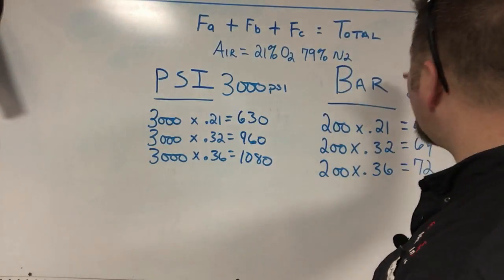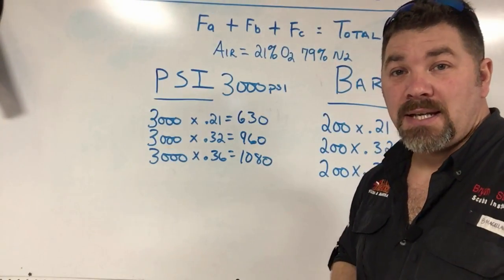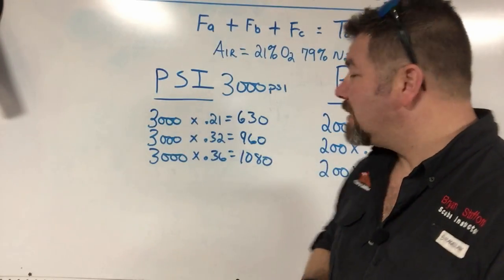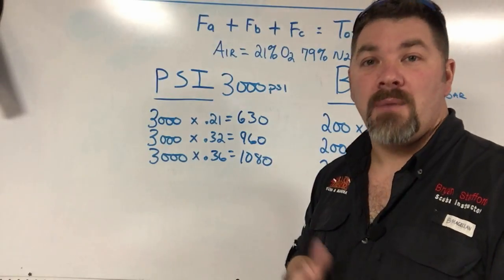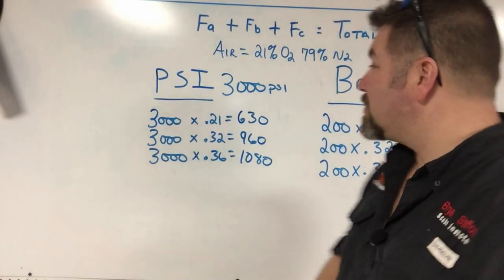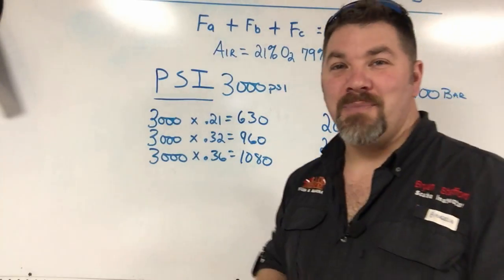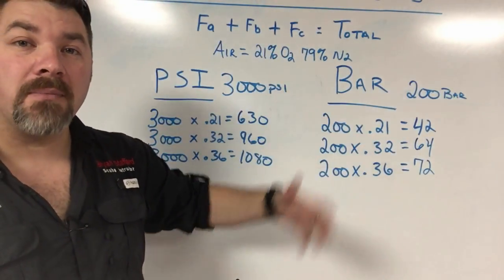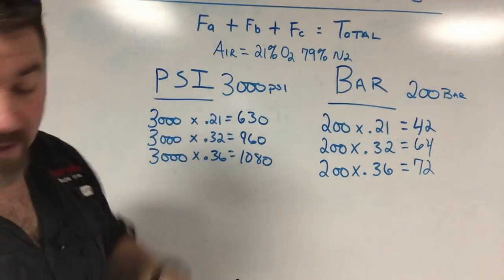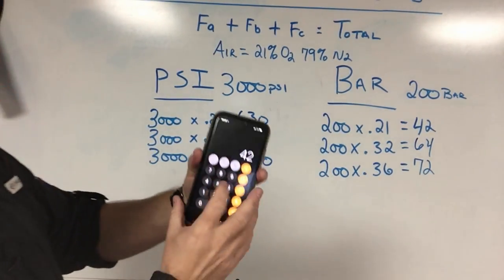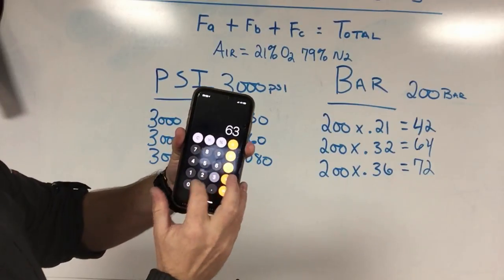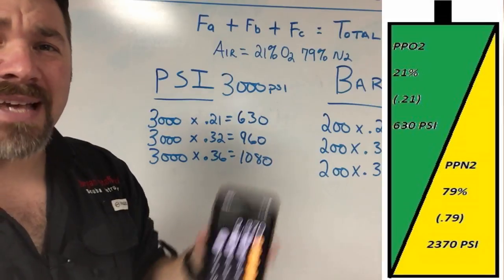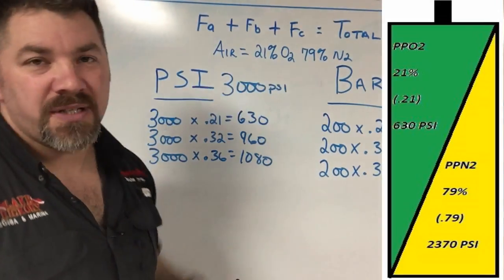These numbers will also tell me the nitrogen content. If I've got a 3,000 PSI cylinder and I subtract 630 PSI from it—the oxygen partial pressure—that gives me the nitrogen partial pressure. We understand nitrogen is 79%, but 79% of what? Just take 3,000 minus 630, which equals 2,370 PSI of nitrogen in that cylinder.